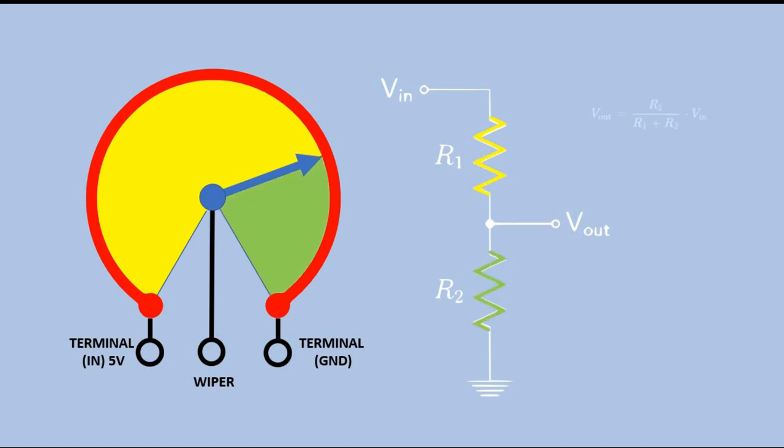We use following formula to calculate the output voltage. Now let's check what happens when the shaft is turned all the way to the left. In this case resistance of R1 is 0 ohms and that means that output voltage is equal to input voltage which in our case is 5 volts.